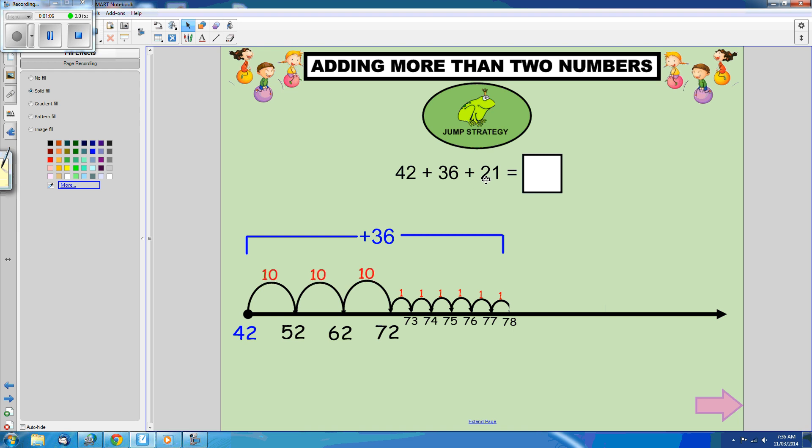We still need to add our 21. So we're currently sitting on the number line at the number 78, and we want to add another 21.